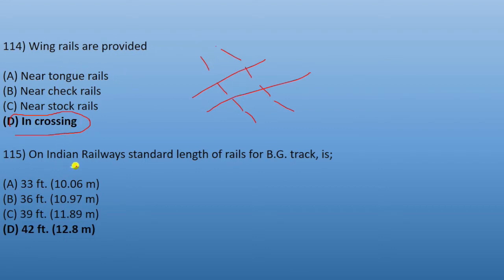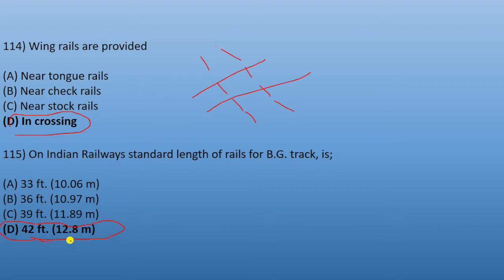Indian Railway standard length of rail for BG track: we have told it in our last part — it is 42 feet, which equals 12.8 meters, approximately 13 meters. The exact value has been given here.